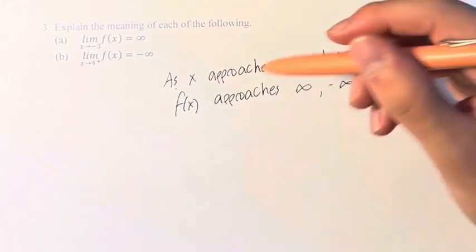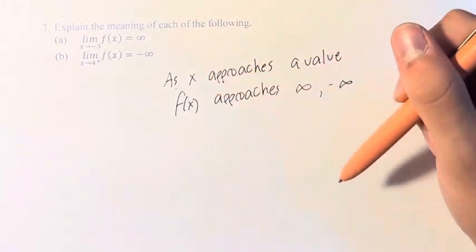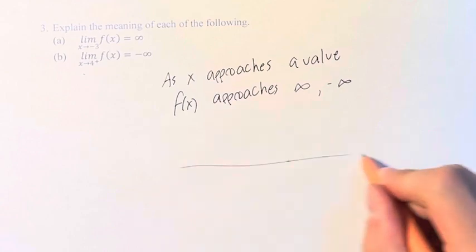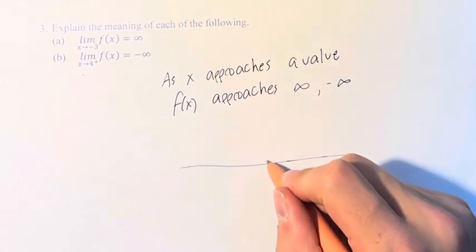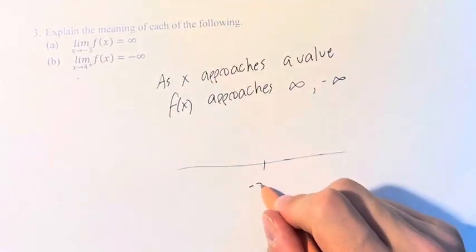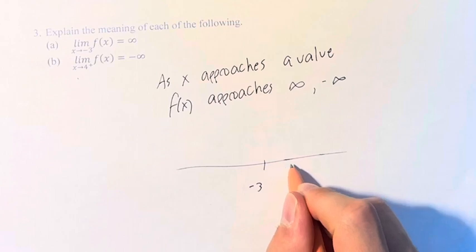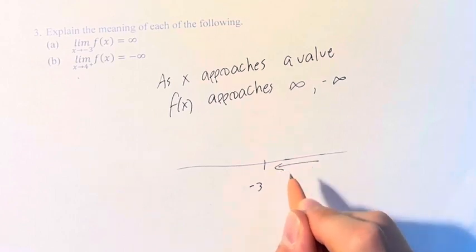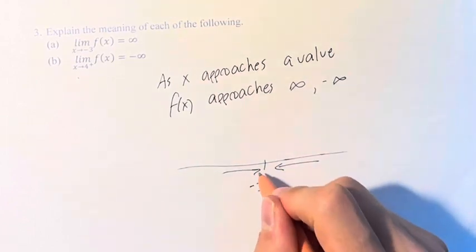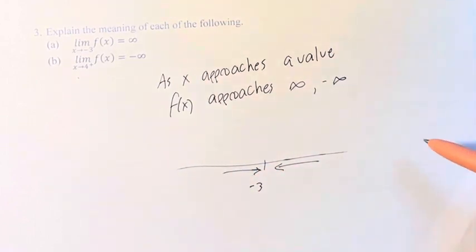What does it mean to approach a value? Well, that means that if we're looking at the number line and we have negative 3 here, as x gets closer and closer to negative 3,